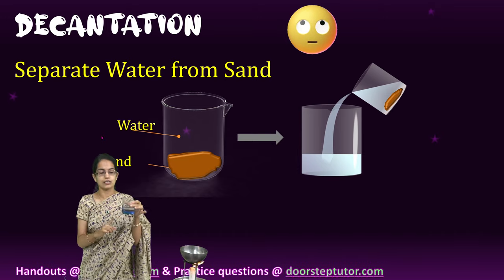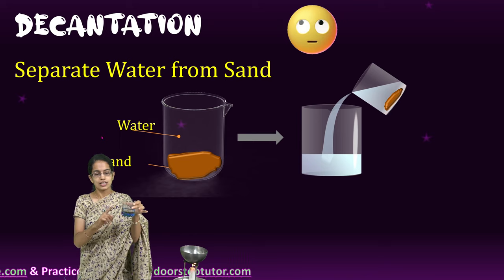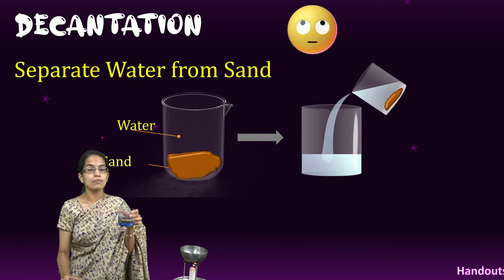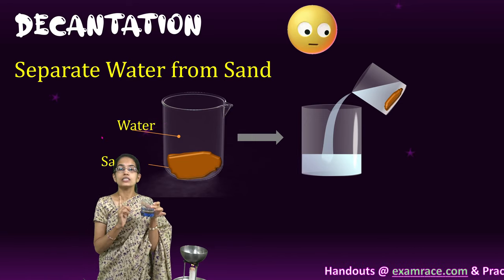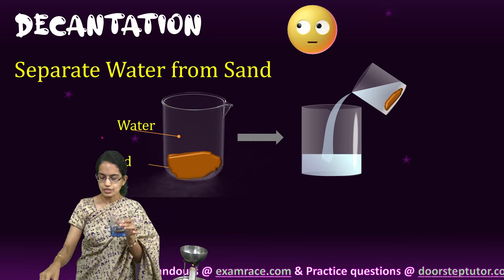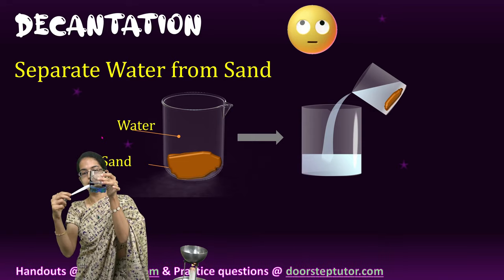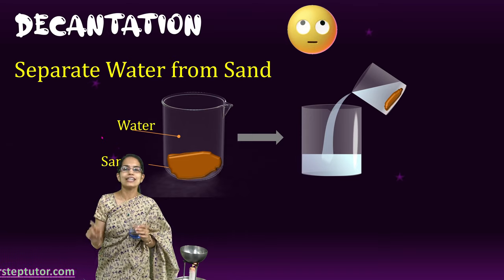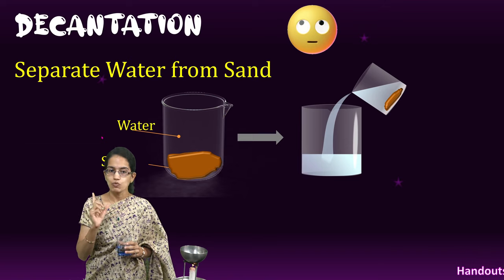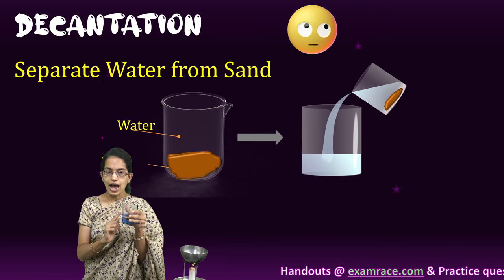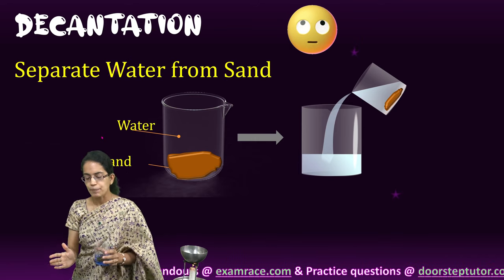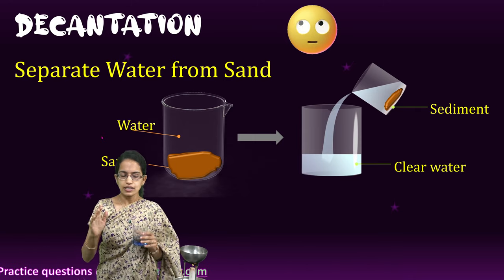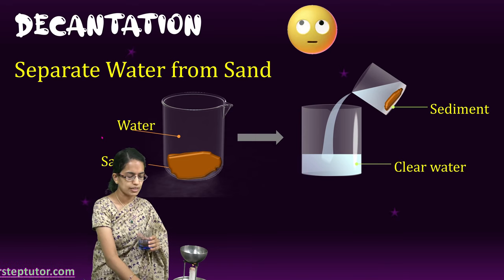This should occur without disturbing the settled water. If I shake it, the insoluble substances would mix in again. So it's very important that the sedimentation is not disturbed. If I shake and re-dissolve it, the decantation process would not work. For decantation to occur, you must let it settle first, then separate out the liquid. The sediment remains behind and clear water is obtained separately.